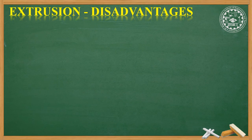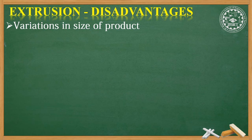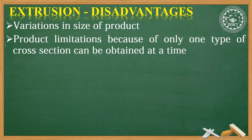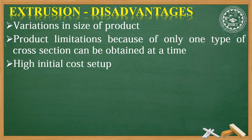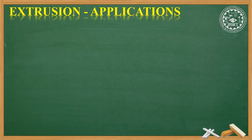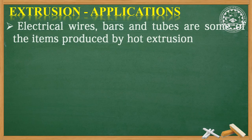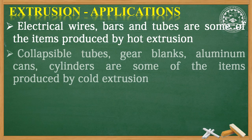Talking about the disadvantages: variations in size of product are limited. There are product limitations because only one type of cross-section can be obtained at a time. There is also a high initial setup cost. Regarding applications, electrical wires, bars, and tubes are produced by hot extrusion. Collapsible tubes, gear blanks, aluminum cans, and cylinders are produced by cold extrusion.